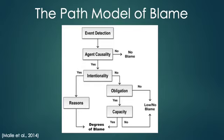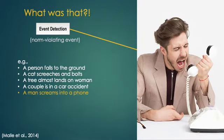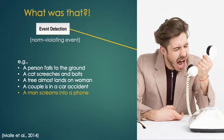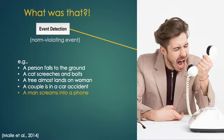Malley and colleagues note that their Path Model of Blame begins at step one: event detection. The focus is on processes that emerge due to an event or act. The process begins if the social perceiver detects that an event violated a norm. Examples include a person falling to the ground, a cat screeching and bolting, a tree almost landing on a woman, a couple in a car accident, or a man screaming into a phone — all norm-violating events that might trigger someone to go down the cognitive path toward blame.